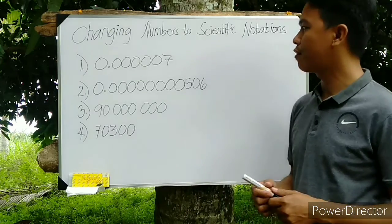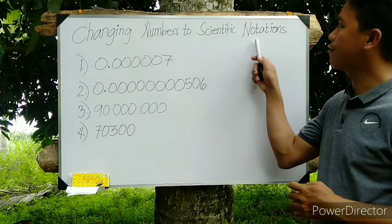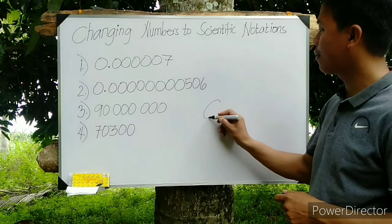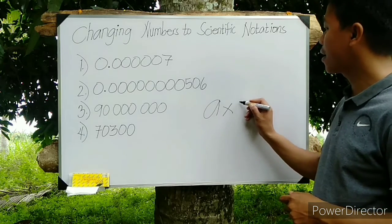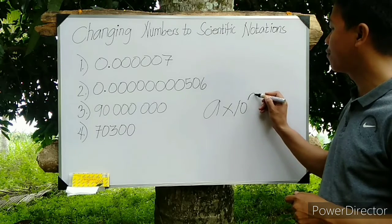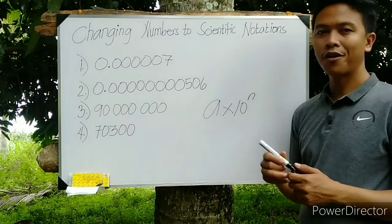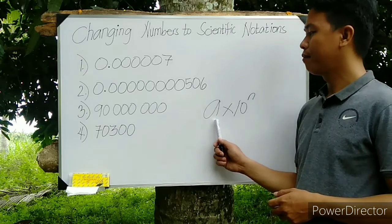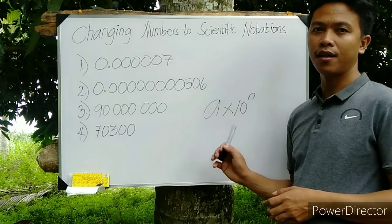Before that, let's have first the review. What is scientific notation? So the form of that is A times 10 to the power of n, where the value of A should not be equal to 10 but not less than 1.